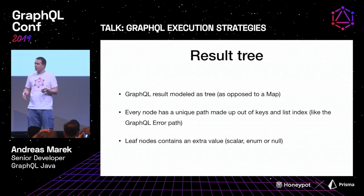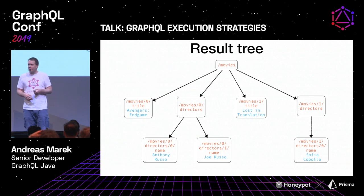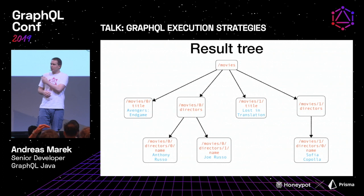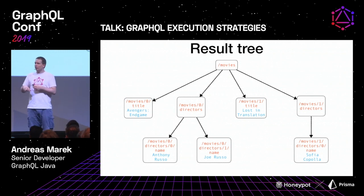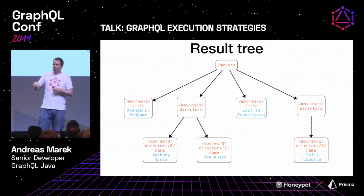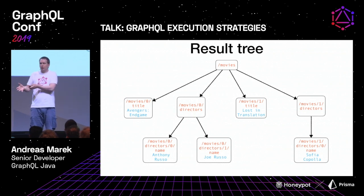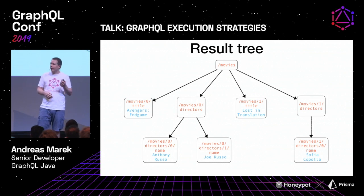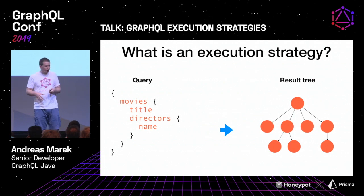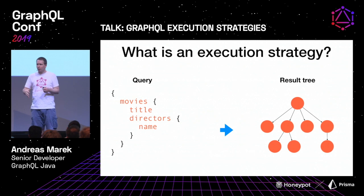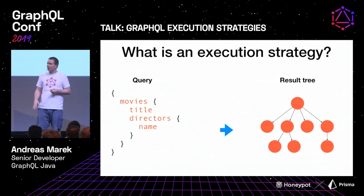So let's look at our example again. This is a tree made of a top-level movies node, then fields for each movie — title and directors — and then the director nodes at the bottom. Every leaf node has an additional value. An execution strategy, for this talk, is something that transforms a query into this result tree. It's a broad description but good enough for today.